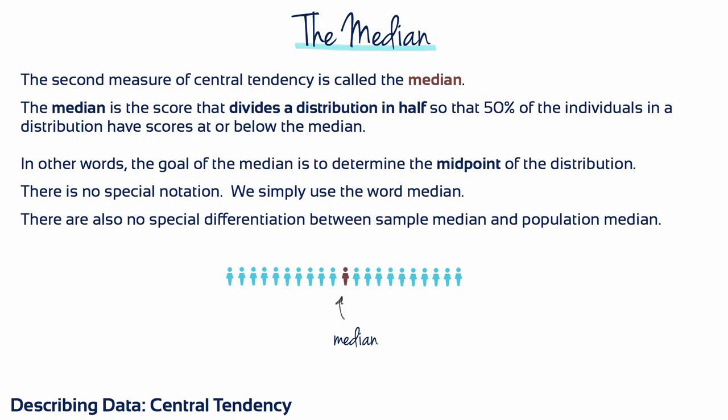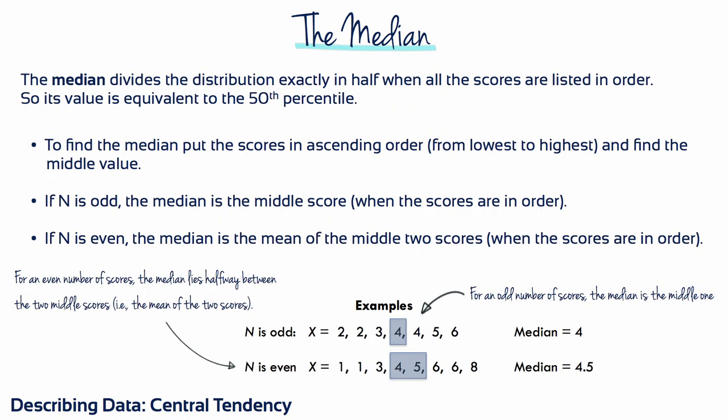The second most common measure of central tendency is the median. The median is the middle score when all the scores in a sample are arranged in ascending order from lowest to highest. We can think of the median as the 50th percentile. To find the median, put the scores in ascending order from lowest to highest and find the middle value.